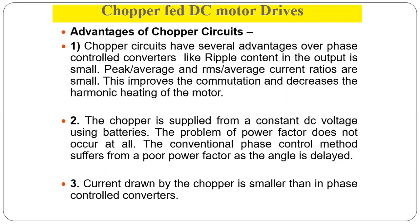Chopper circuits have several advantages over phase-control converters. First, the ripple content in the output is very small, and the peak-to-average and RMS-to-average current ratios are small. This improves commutation and decreases the harmonic heating of the motor, which is one of the most significant advantages of the chopper.